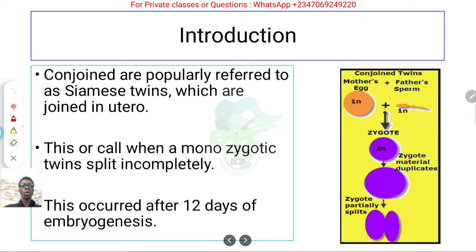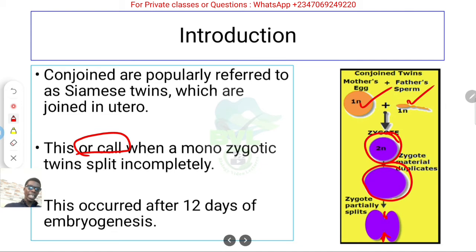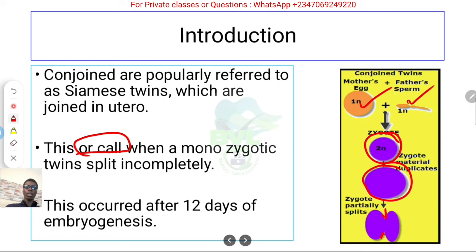This occurs when monozygotic twins split incompletely. As you can see, the mother's egg and the father's sperm form a zygote as usual. The zygote begins to split mitotically, but for some reason, certain parts did not split completely. Those parts remain attached as the embryo continues to develop into a real baby.